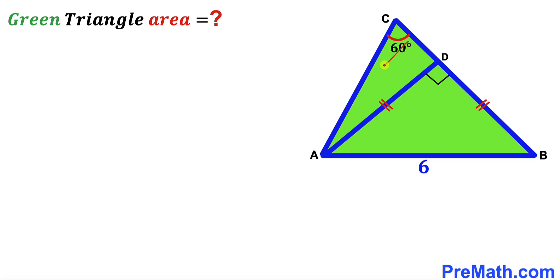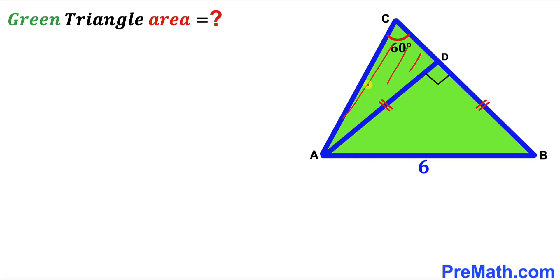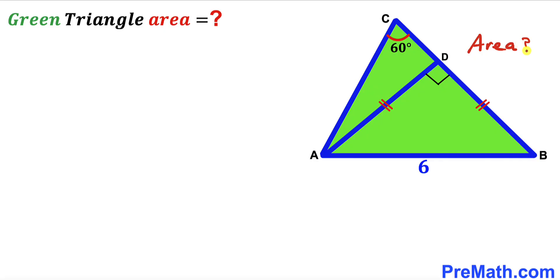Welcome to PreMath. In this video we have got triangle ABC that consists of two triangles: the isosceles triangle ADB and the right triangle ADC. In the given diagram, angle ACD is 60 degrees, side AB has length 6 units, and side AD equals side BD. Our task is to calculate the area of the green shaded triangle.